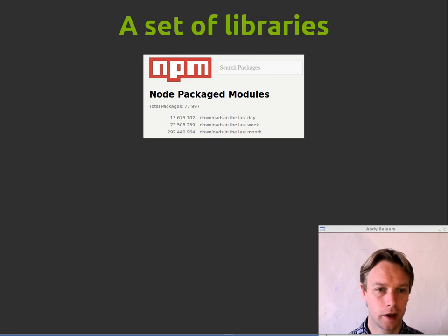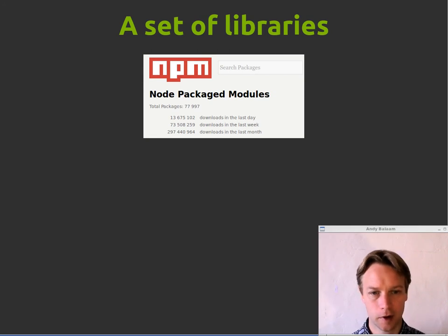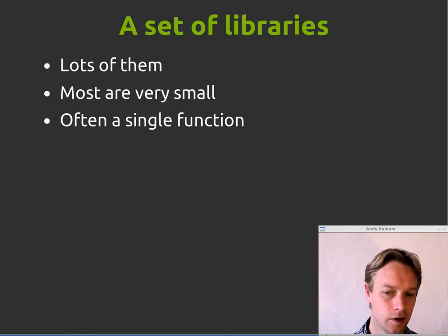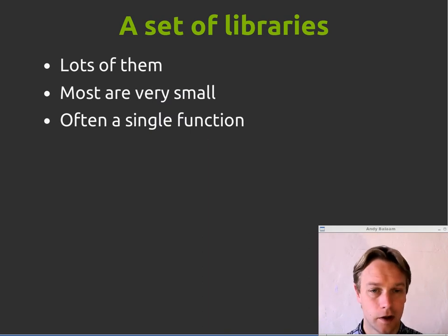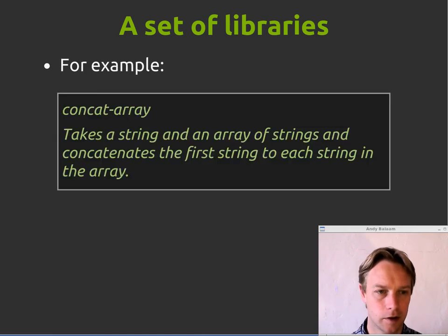Node is also a huge collection of libraries, many of which are very small and specialized. You can find them all on the NPM website. When I took this screenshot, there were 77,997 modules — I'm sure there's over 78,000 now. Most of them are really small and they can even be a single function. That weekday library we saw was just one function, but packaged up as a library that you can reuse somewhere else.